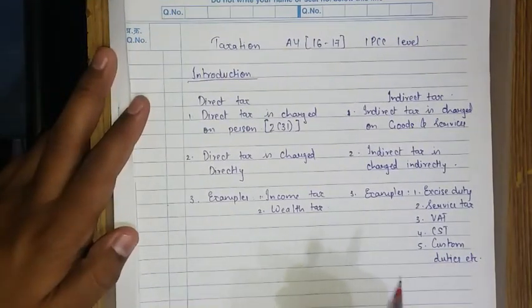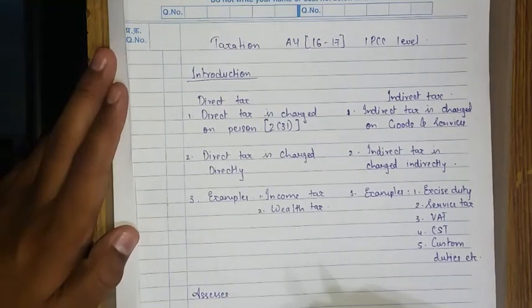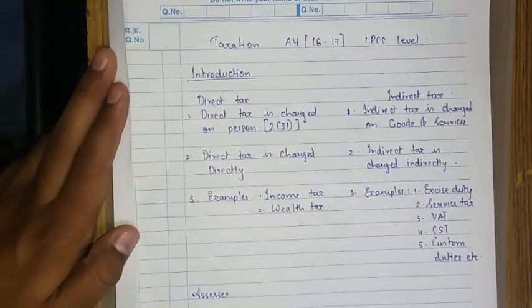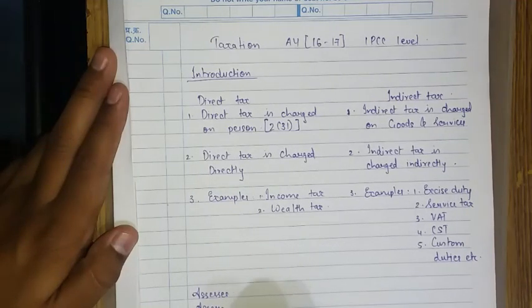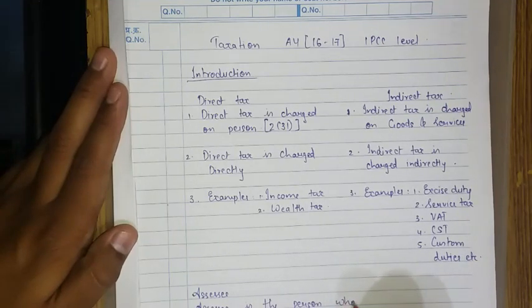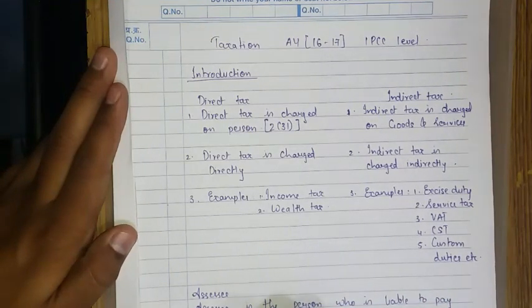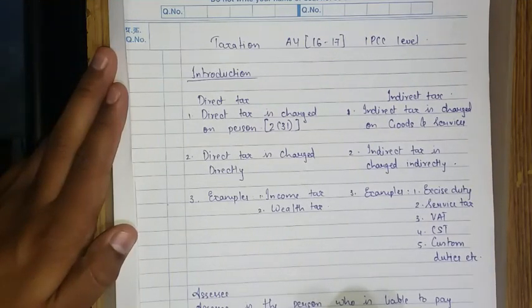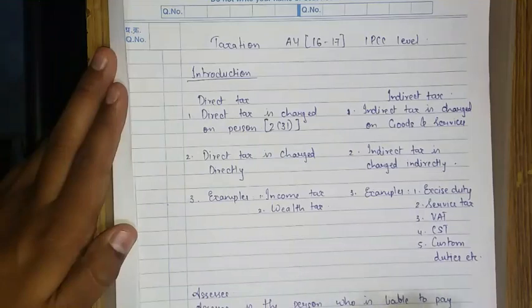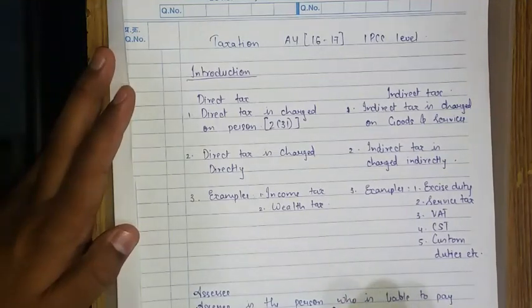The most simple thing to start with is assessee. Assessee is a person who is liable to pay tax for the previous year 1516. PY stands for previous year 1516.